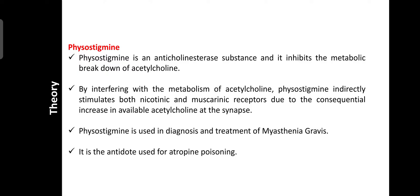Physostigmine is an anticholinesterase substance or agent — it inhibits the cholinesterase enzyme. This enzyme is required for the metabolism of acetylcholine into acetate and choline. Physostigmine inhibits the metabolic breakdown of acetylcholine, and by interfering with its metabolism, physostigmine indirectly stimulates both nicotinic and muscarinic receptors. Due to the consequential increase in available acetylcholine at the synapses, the response of acetylcholine increases.